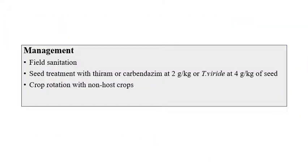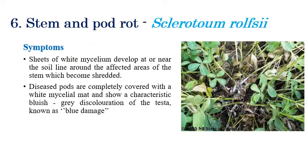For management of dry root rot, field sanitation and seed treatment with thiram or carbendazim at 2 grams per kilogram, or the biocontrol agent Trichoderma viride at 4 grams per kilogram of seeds, can be recommended. Crop rotation with non-host crops is also an effective management option.